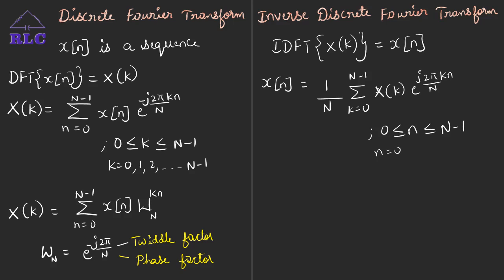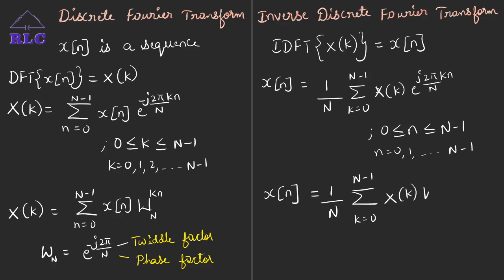That is, n equals 0, 1, so on up to N-1 samples. x of n can also be represented as: 1 over N, summation k ranging from 0 to N-1, x of k into W_N to the power of minus kn, where W_N is called the twiddle factor.